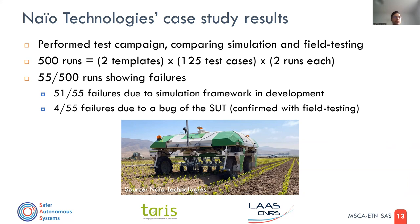The 500 rounds stemmed from the fact that we had two templates — we wanted to test two fields that we could compare with real fields available in reality. Each template was used to generate 125 test cases, and each test case was run twice. The results show that 55 test cases led to failures with a failed verdict.